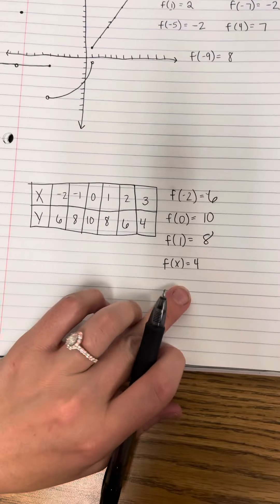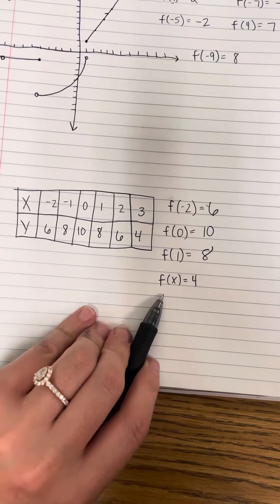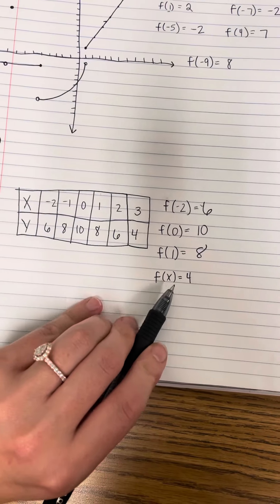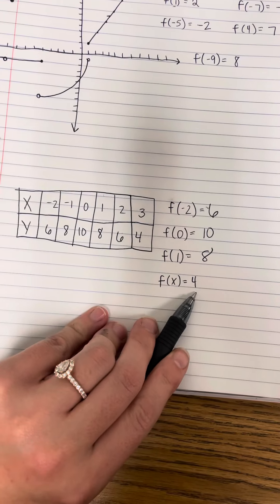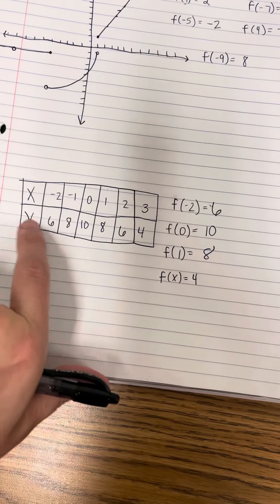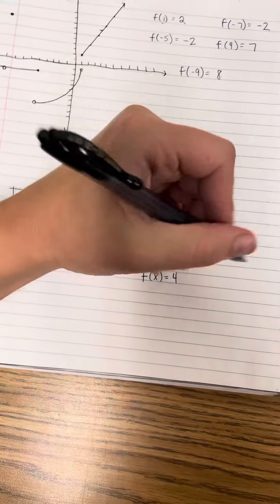Now this last one is a little bit trickier, doing the opposite. So it's saying f of x is equal to 4. So it's saying y is 4. So when y is 4, what is x? And that's going to be 3.